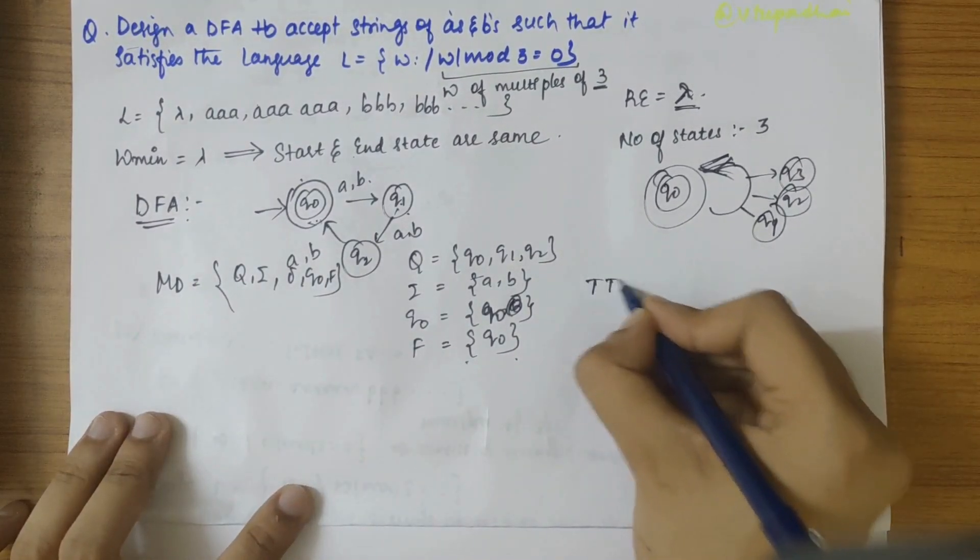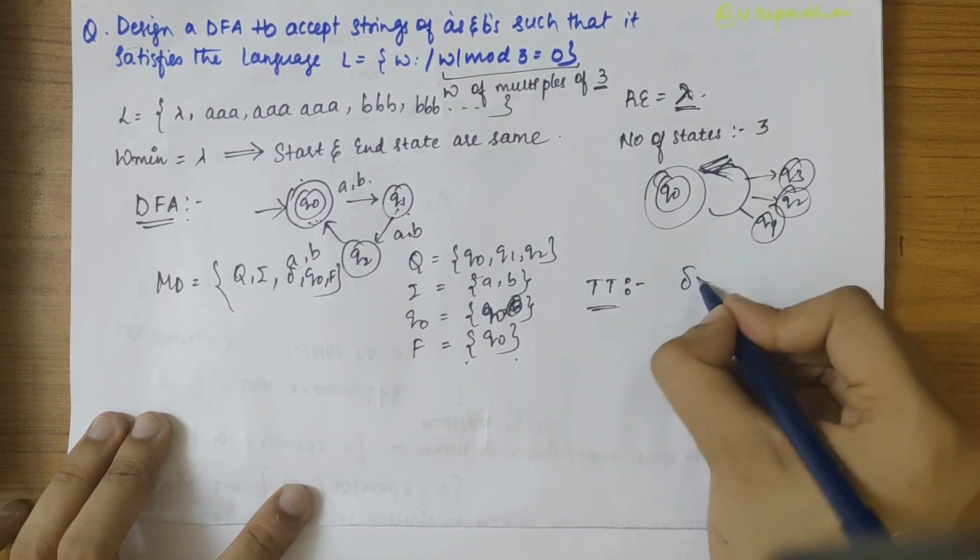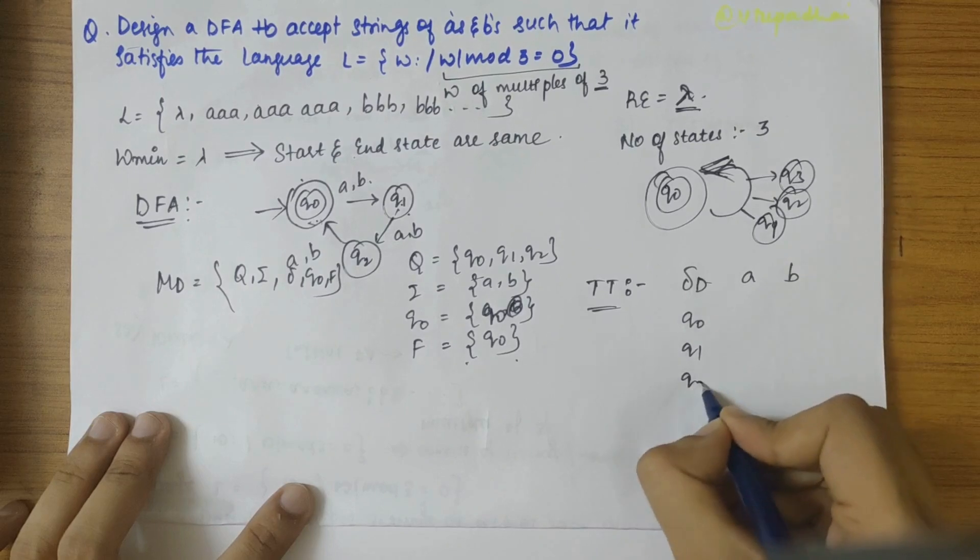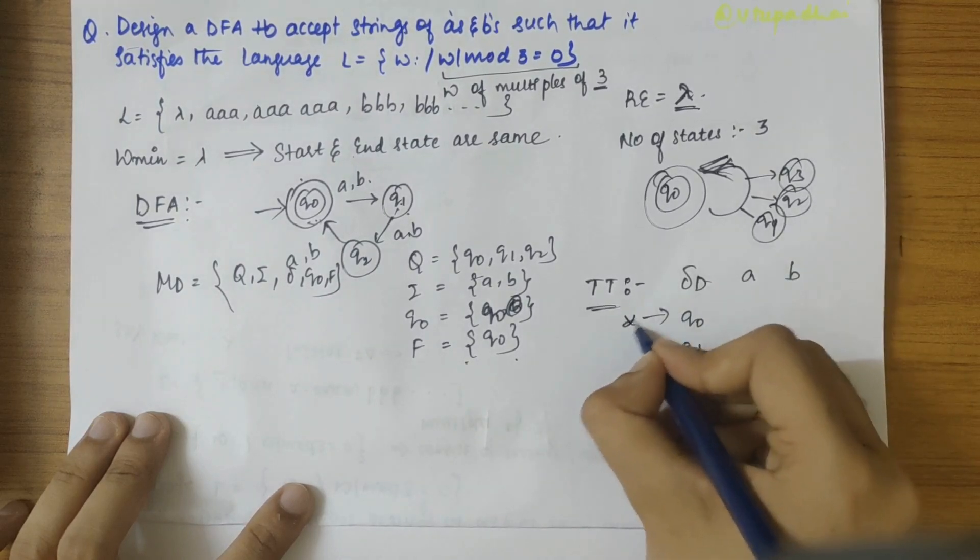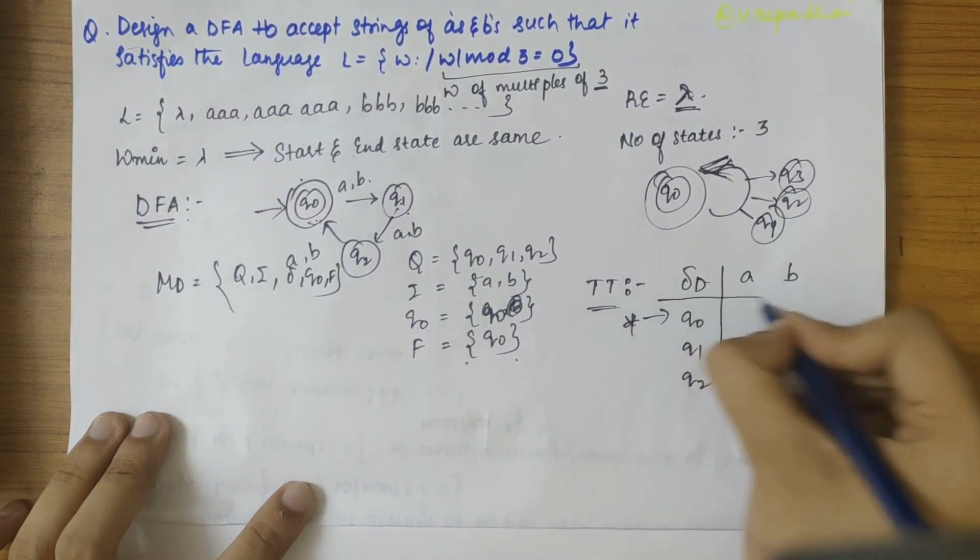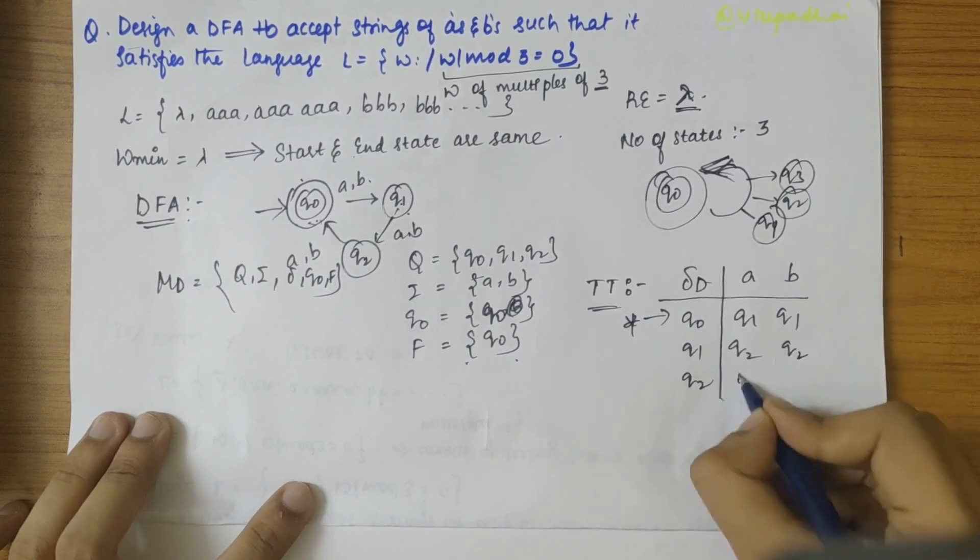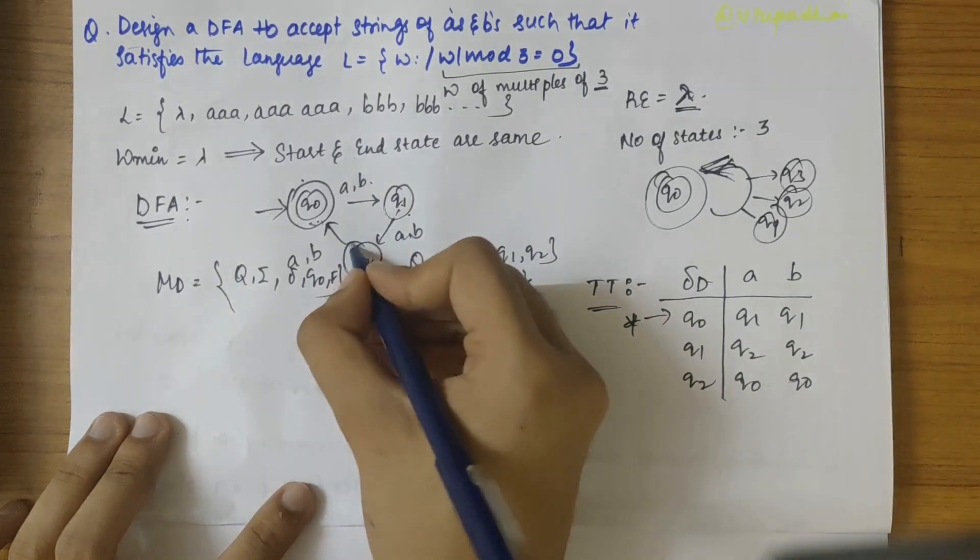Now let's define the transition table for this. Here A and here B, and here Q0, Q1, and Q2. This is the start state and this is the final state as well. So here Q1, Q1, Q1, Q2, Q2, Q0, Q0.